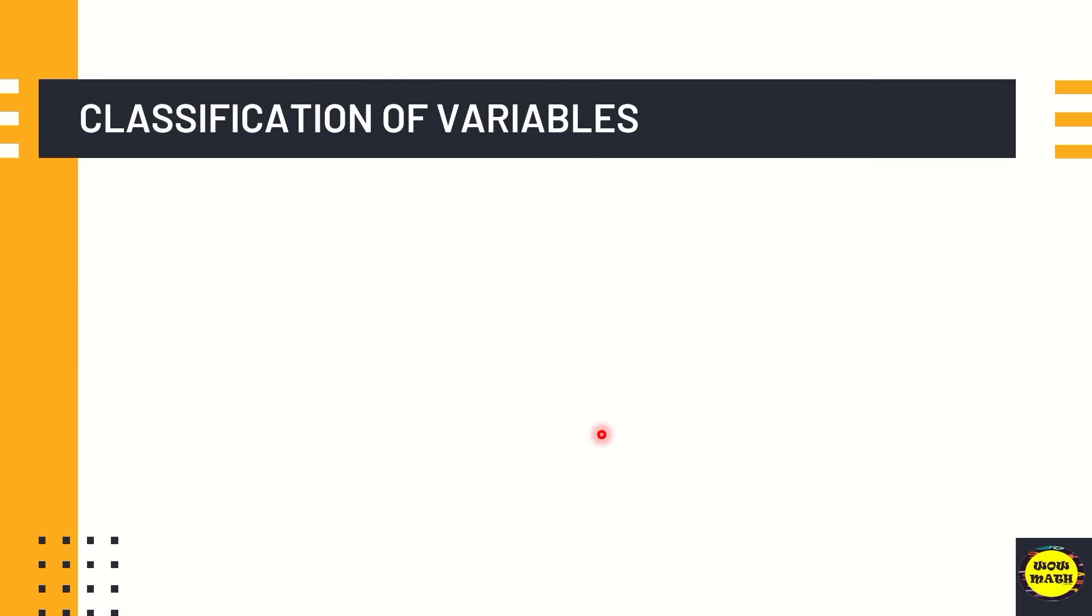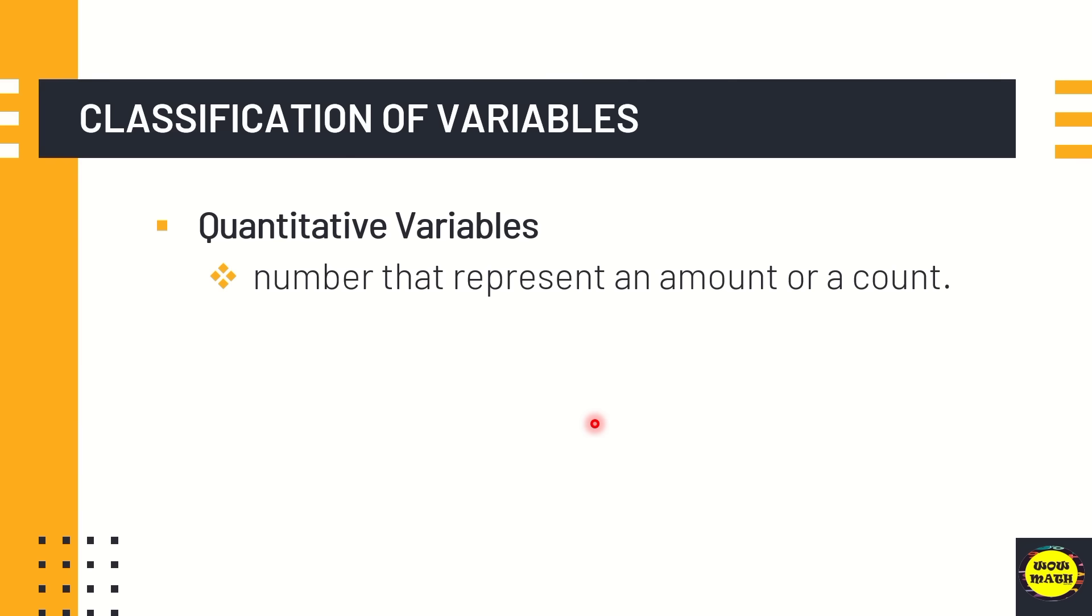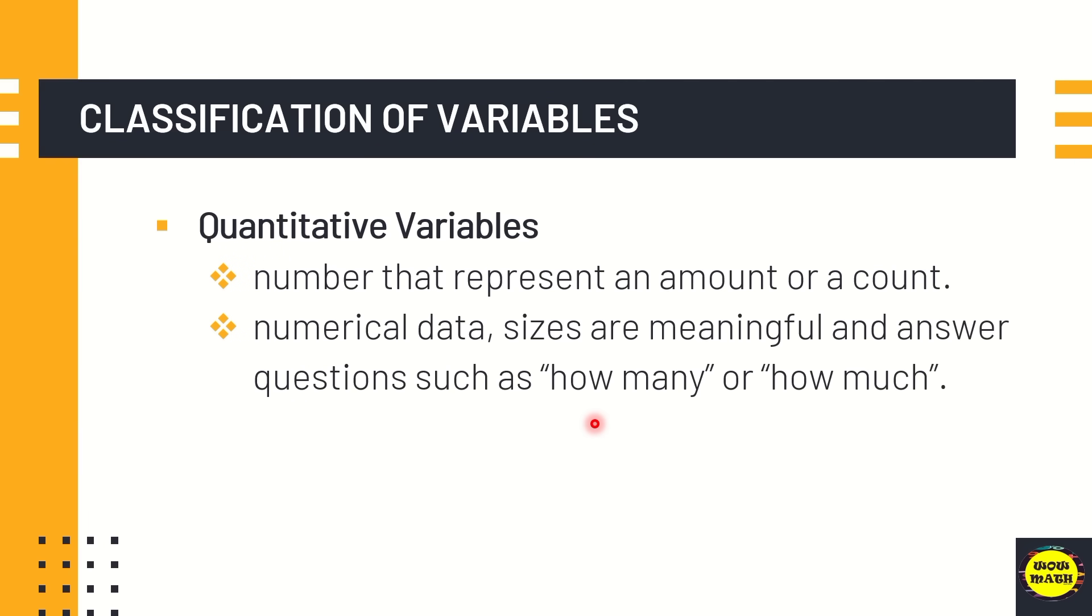Another classification of variables is quantitative variables. So what is quantitative variables? It is a number that represent an amount or account. It's also numerical data. Sizes are meaningful and answer questions such as how many or how much. For example, the height, weight, household size, and number of registered cars or the number of students in a class.